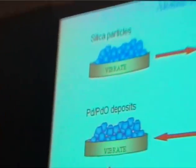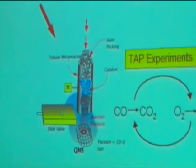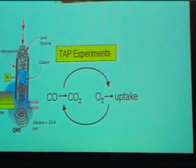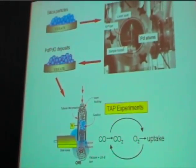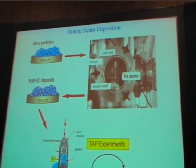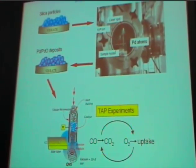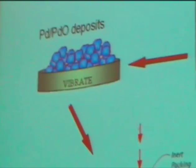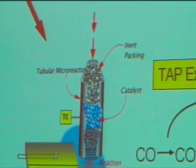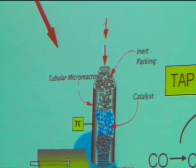So one of the big developments in our lab over the past couple of years has been the development of an atomic beam deposition system. You may be familiar. Atomic beam is used a lot in the circuits industry. People use it to make thin films and things like this, but we want to do something a little bit different. We want to take an existing catalyst or an inert, in our case, silica particles, as is shown in the picture there, and we can put them in this deposition system and vibrate the bed.